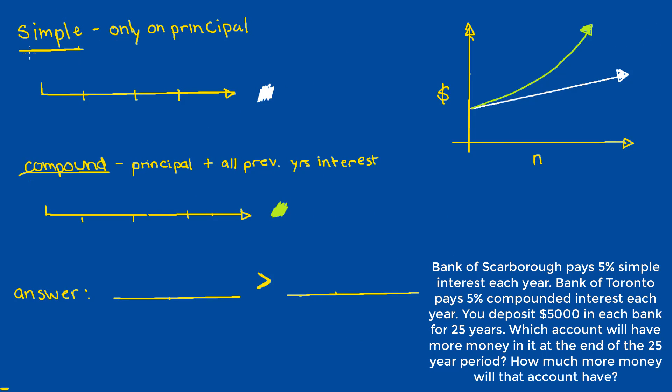So to answer the first part of this question, we really just need to contrast the definitions of simple and compound interest. Simple interest accrues only on the principal.